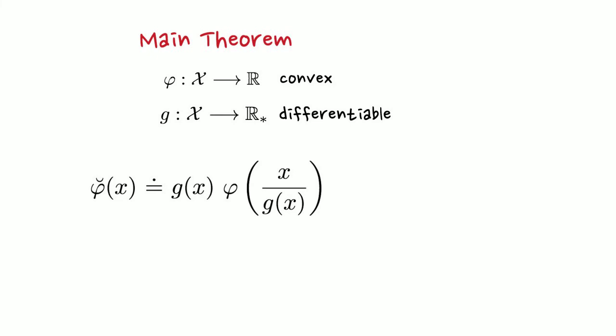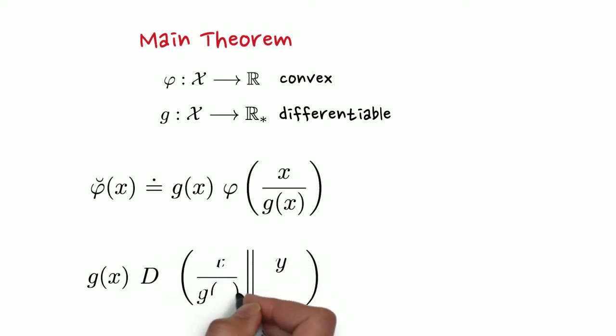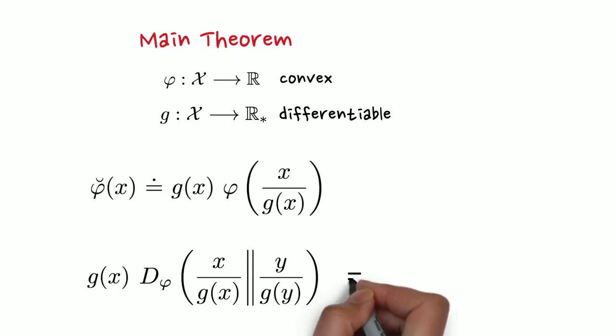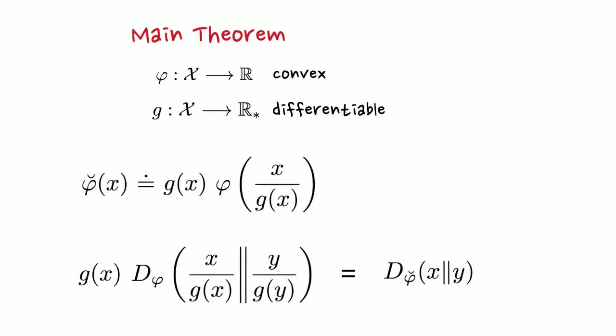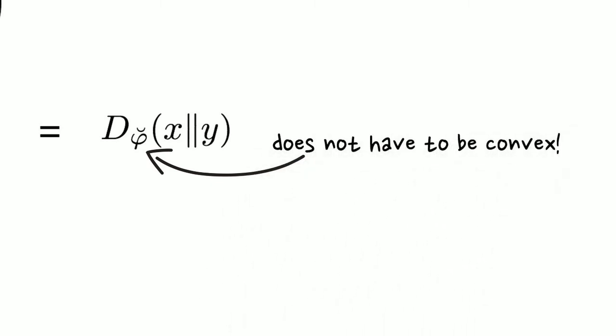What happens to the Bregman distortion of phi brief? It turns out that the Bregman divergence between the normalized versions of x and y with respect to the original generator phi is the same as the Bregman distortion with respect to the new generator phi brief.